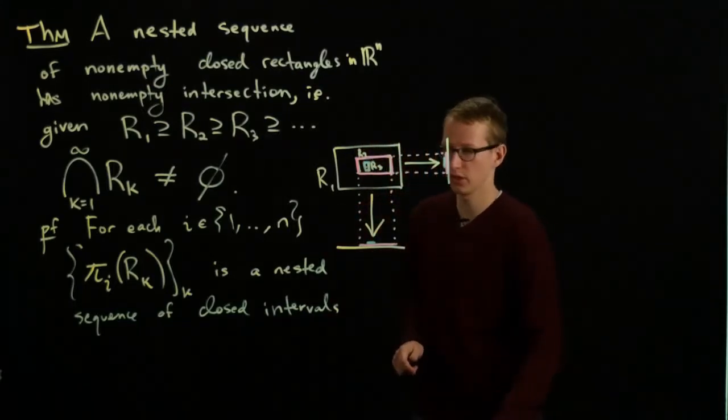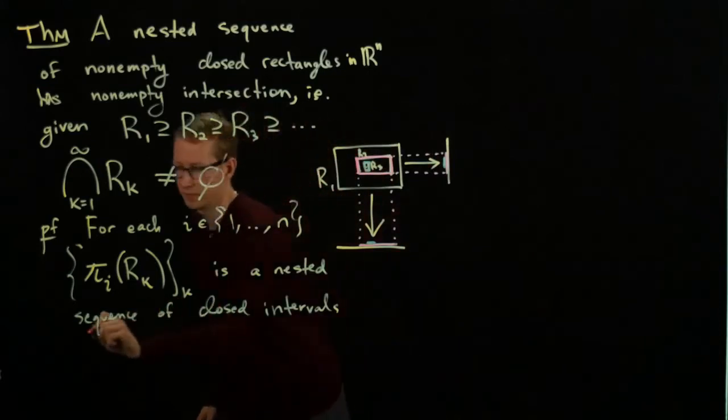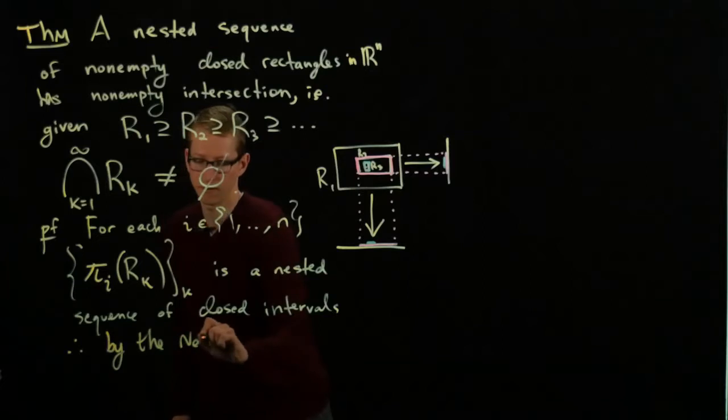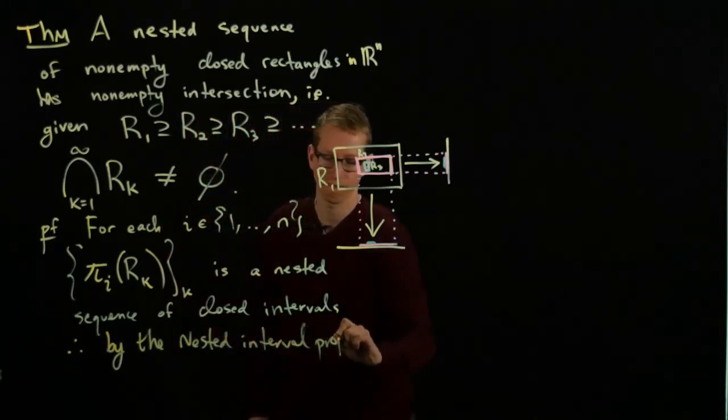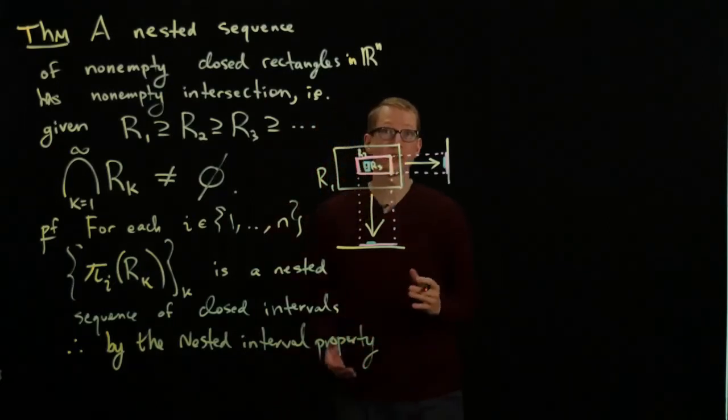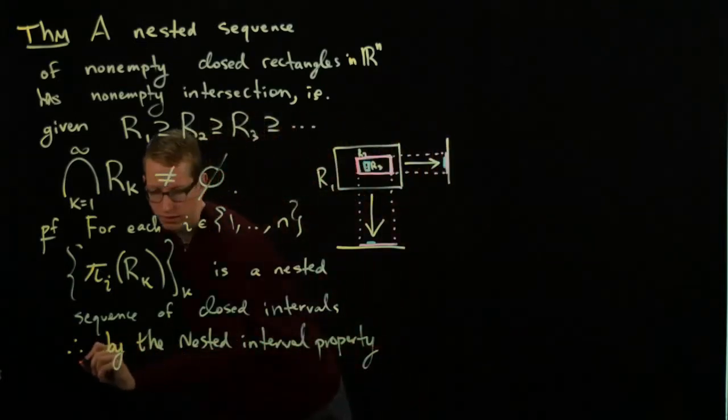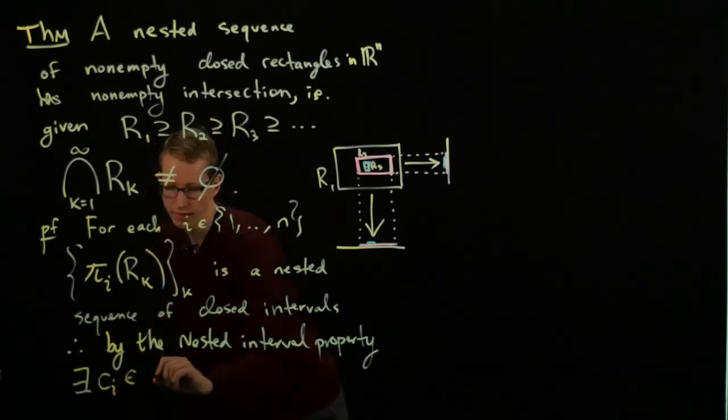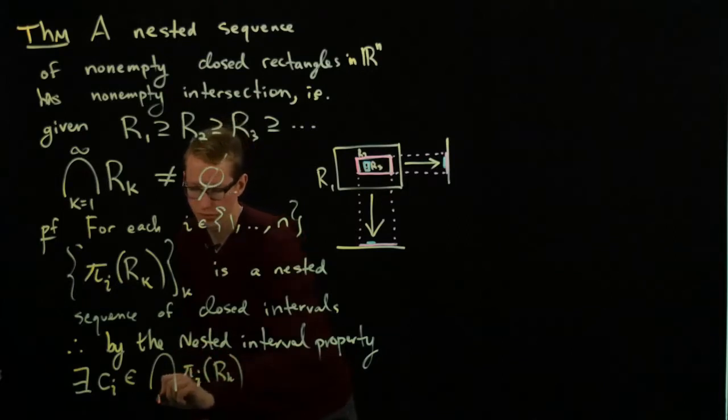The theorem relies heavily on the one-dimensional case, which we will assume is true. Therefore, by the nested interval property, we know that the intersection of all of these projections is non-empty. Therefore, there exists some number ci in the intersection of all of these πi(Rk) over all k.